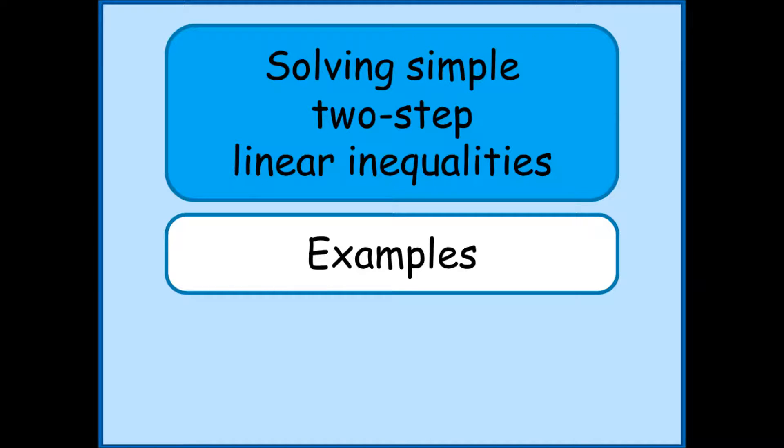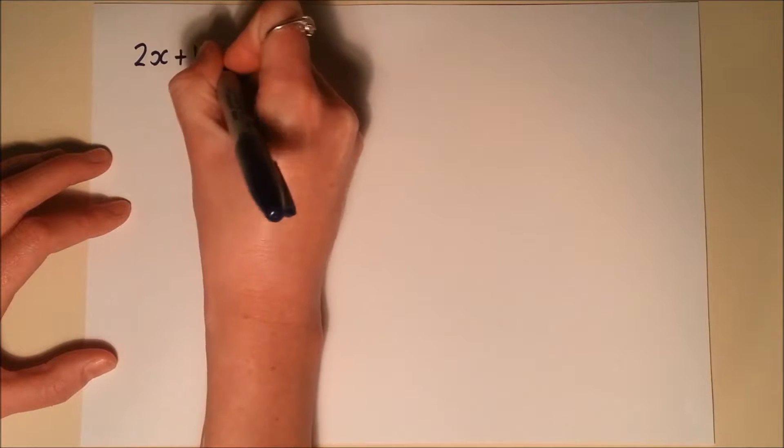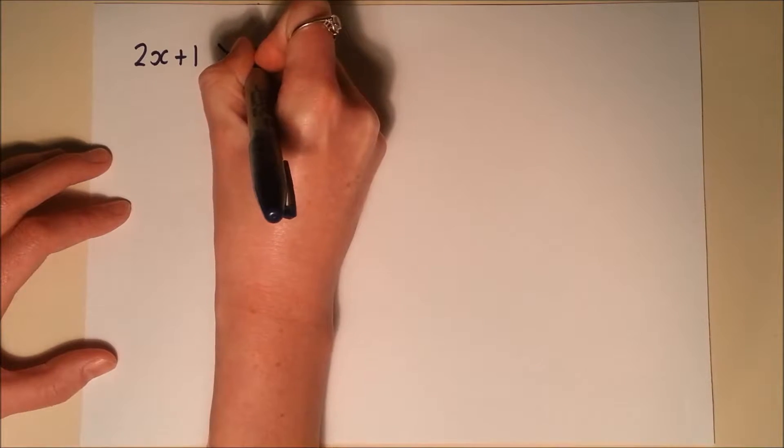Here are a few examples of solving simple two-step linear inequalities. So I'm going to start with this linear inequality. So 2x plus 1 is greater than 9.